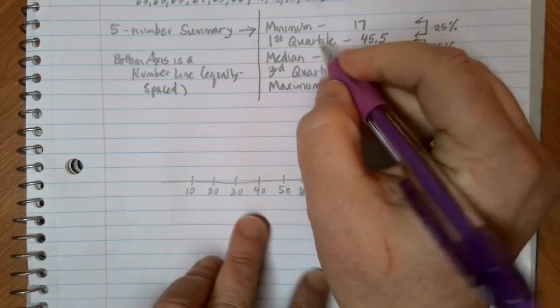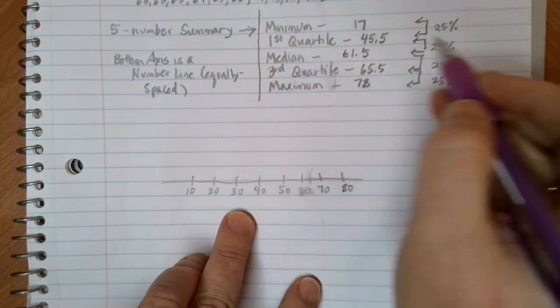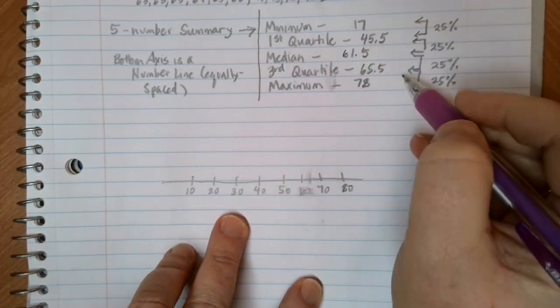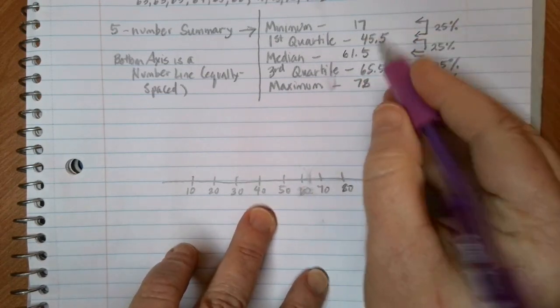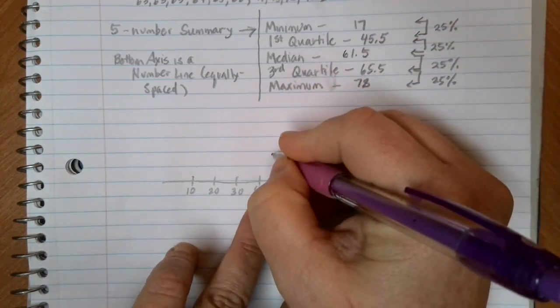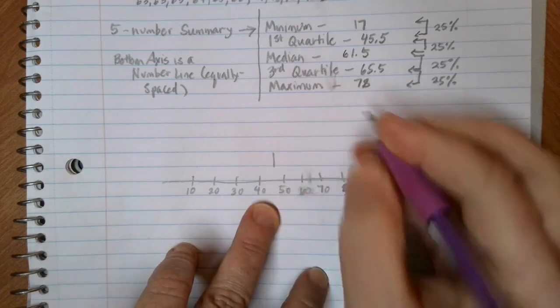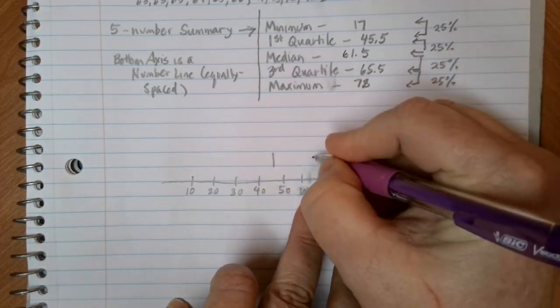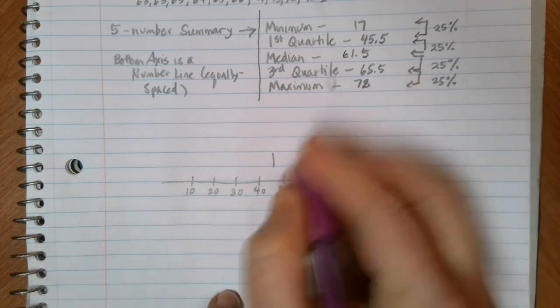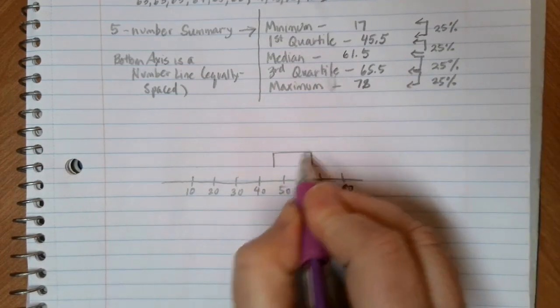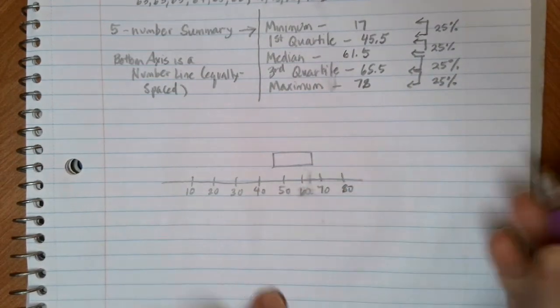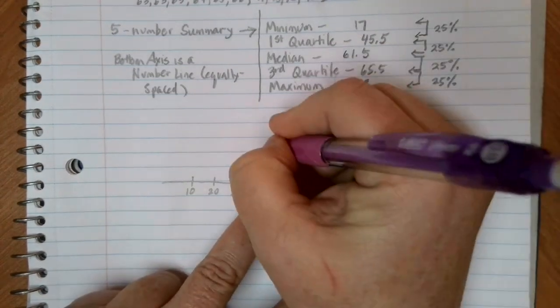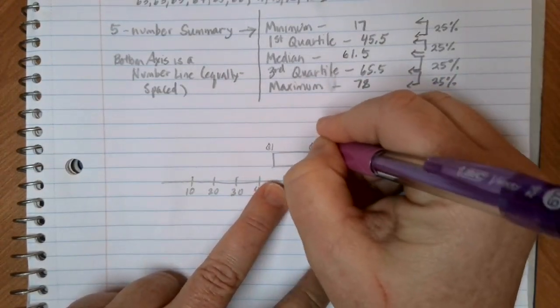Our numbers there are set out and counting. When we do a box and whisker plot, the box is created between the first quartile and the third quartile. Our first quartile is at 45.5, so about right here. Our third quartile is located at 65.5, so about right here. This makes up the box part of the box and whisker plot. So this is Q1 and this is Q3.